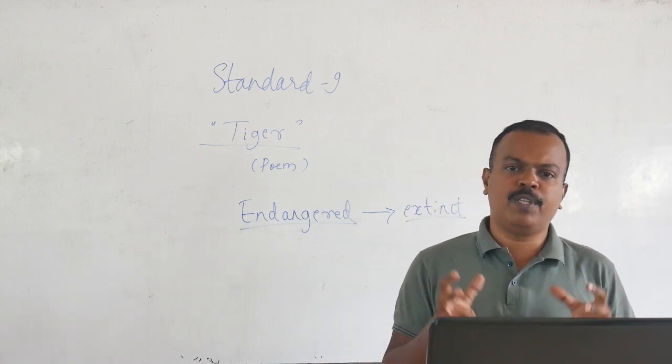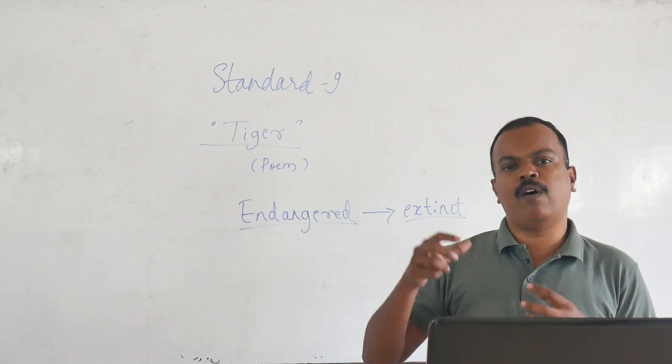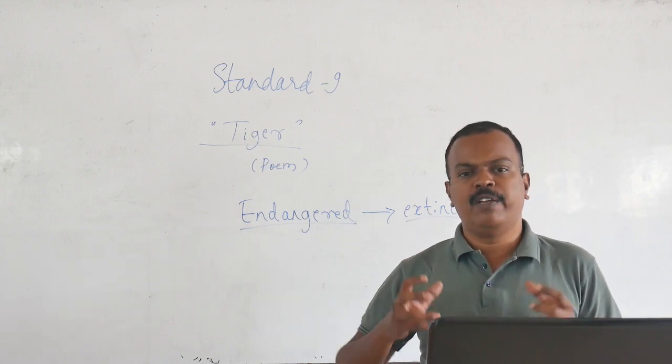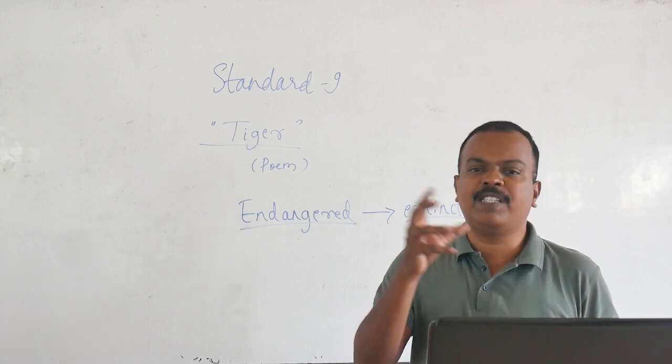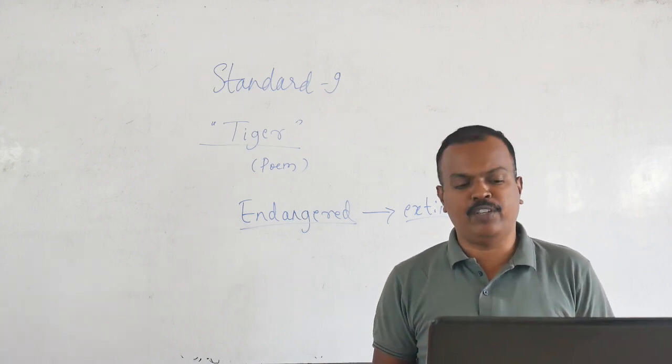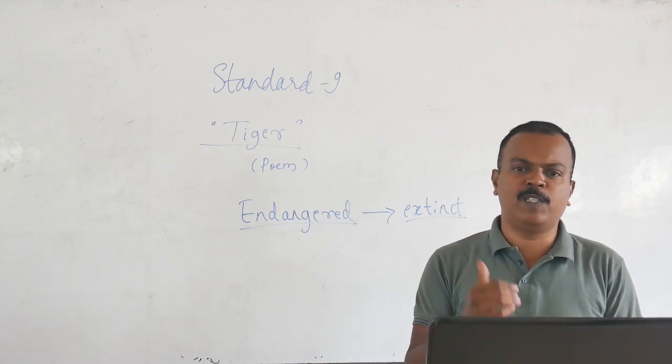So something needs to be done to protect them. Otherwise, the last remaining of that animal species will be lost. This is the concept of classifying an animal as endangered. Now why does this happen actually? Why do animals become endangered?